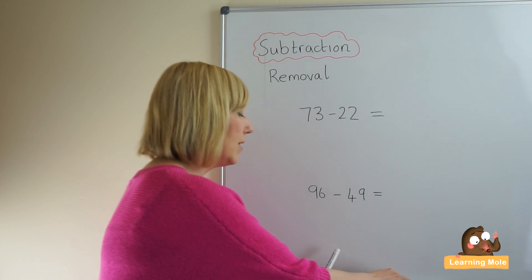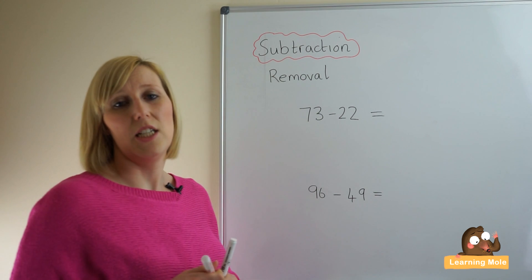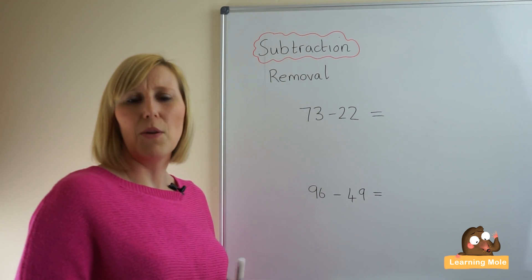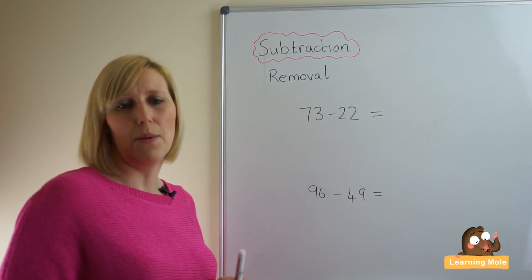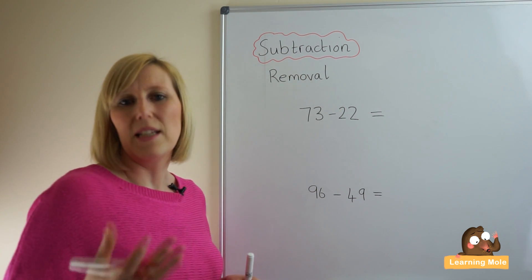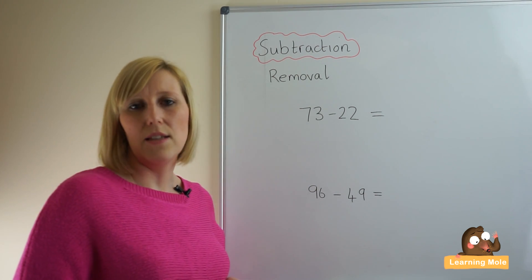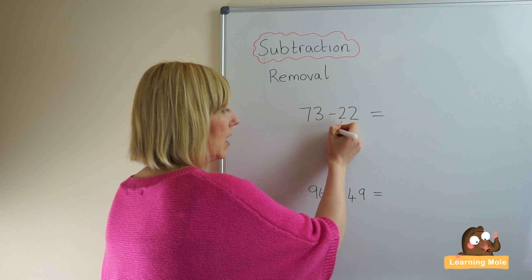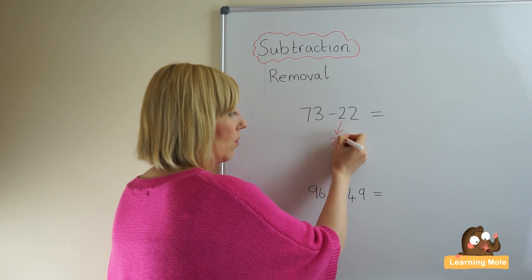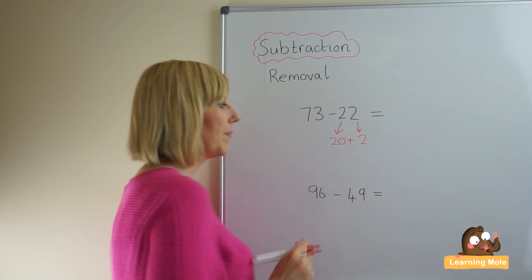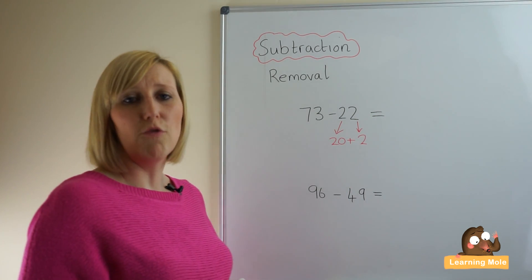Our first step is we're going to partition that smaller number. By this stage your child should be quite comfortable with that partitioning or segmenting of the numbers into whatever place value you're working with. In this case we're working with tens and units, so we're going to partition into tens, our two tens which is 20, and two units. This is where we're going to talk about removal.